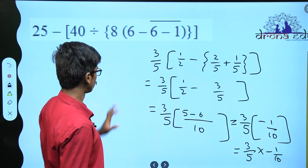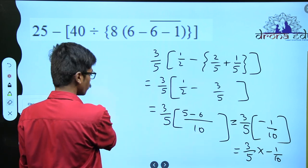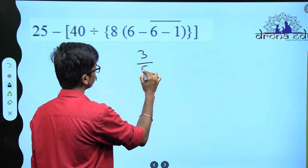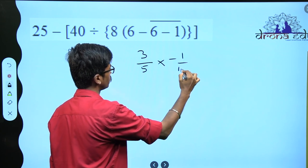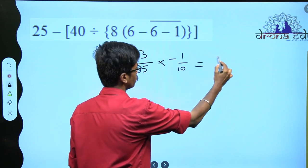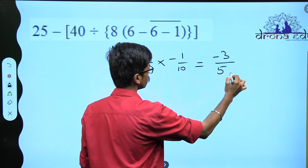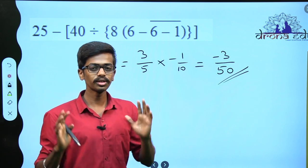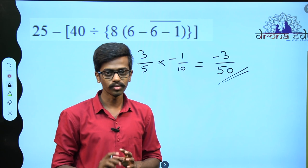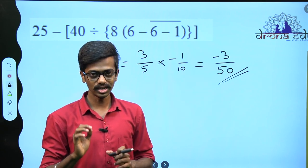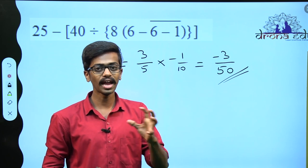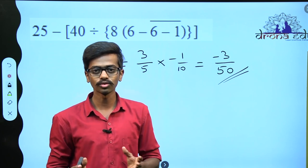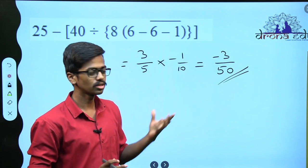Then I do 3 by 5 into minus 1 by 10, which gives me minus 3 by 50. So very simple — this is a very simple topic, BODMAS. But you will be making use of BODMAS everywhere. Always keep in mind the integers and the rules of integers for addition and subtraction, and how the fractions work — the numerator, denominator, multiplication of fractions, division of fractions. You will be using this in all the places.